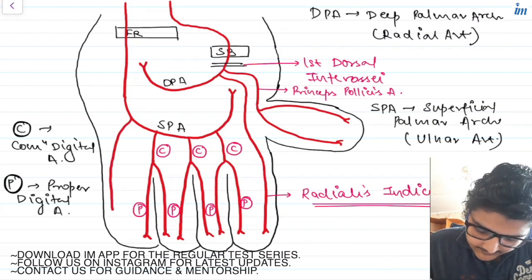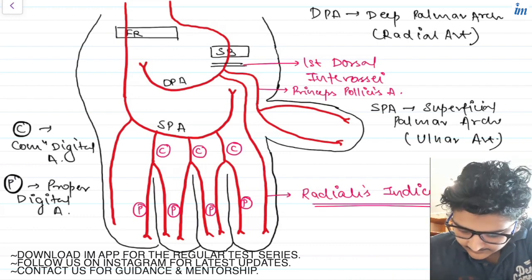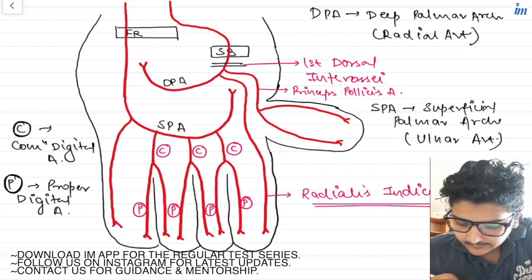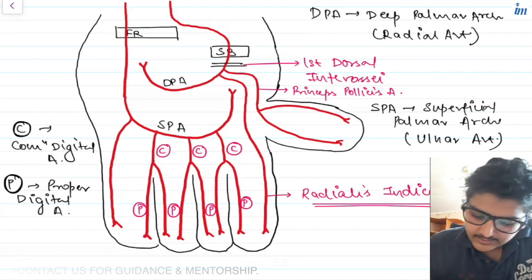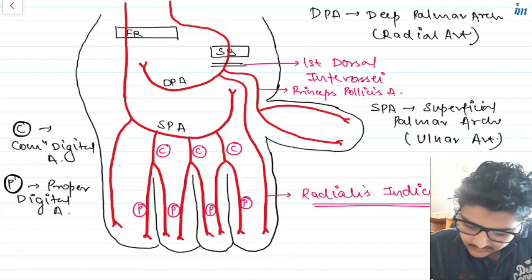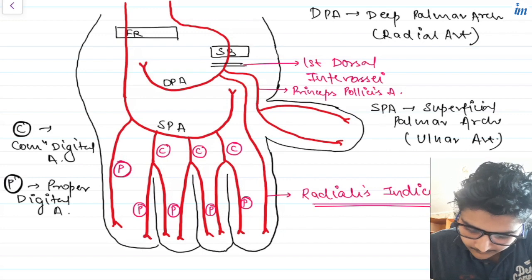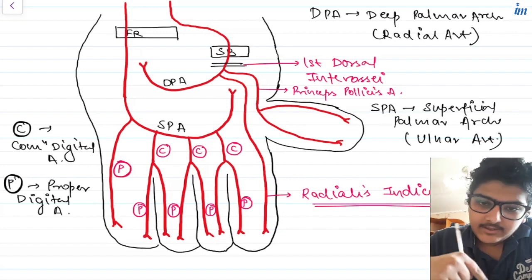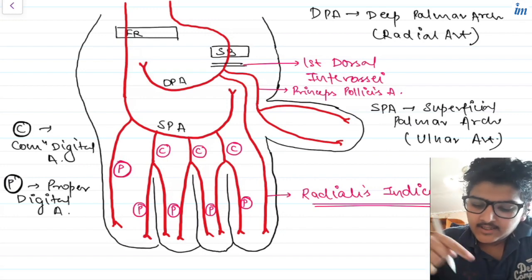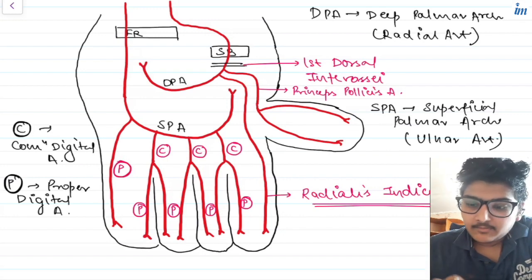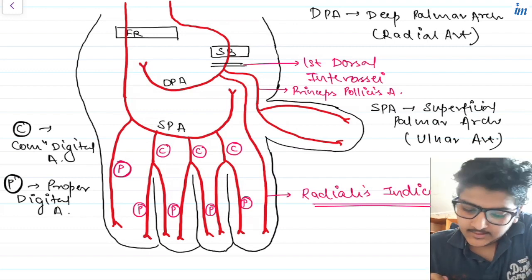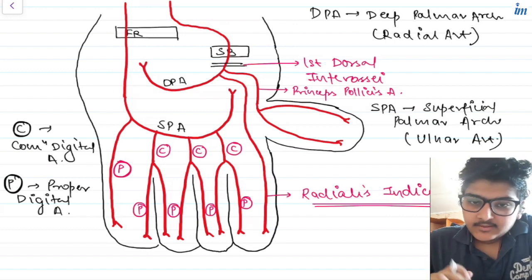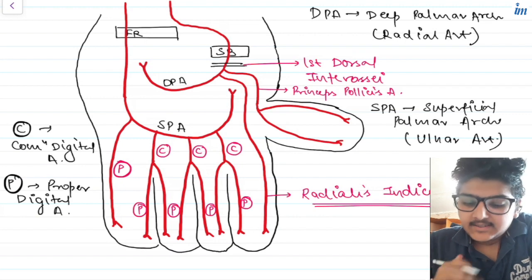But you can still see that the medial or ulnar side of your little finger is left to supply. For this, your superficial palmar arch gives off a different branch to supply the medial side or ulnar side of your little finger, and this branch is also known as a proper digital artery.